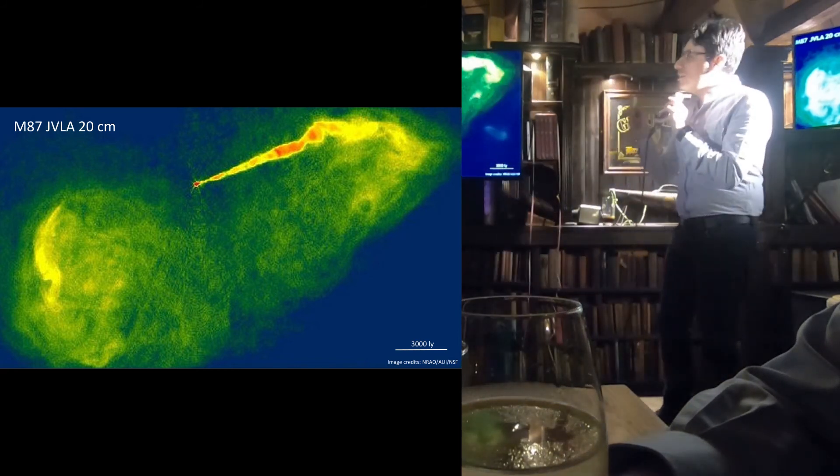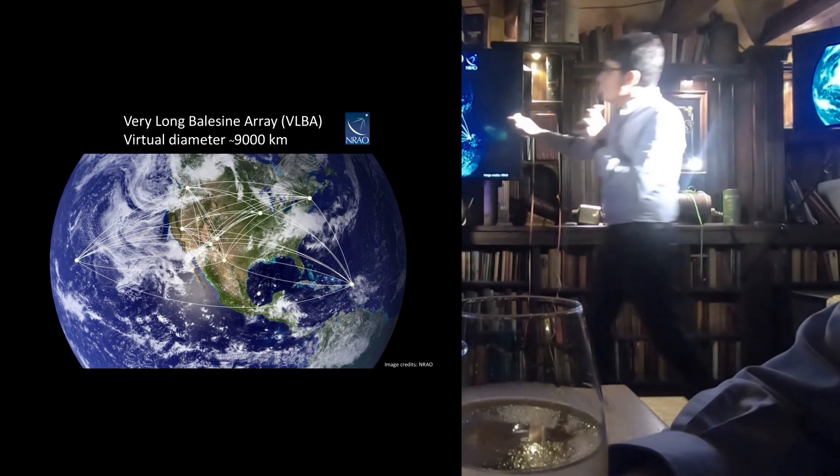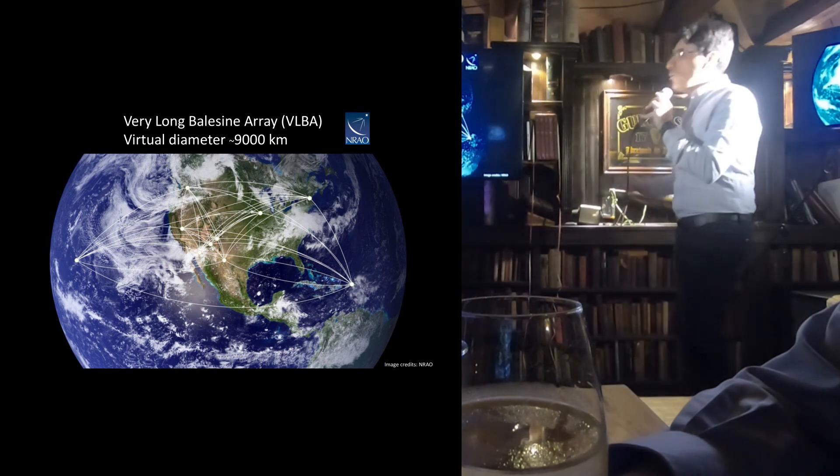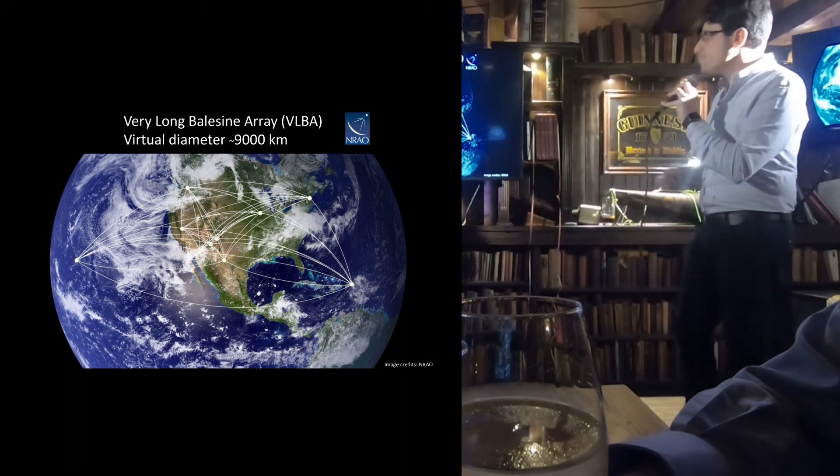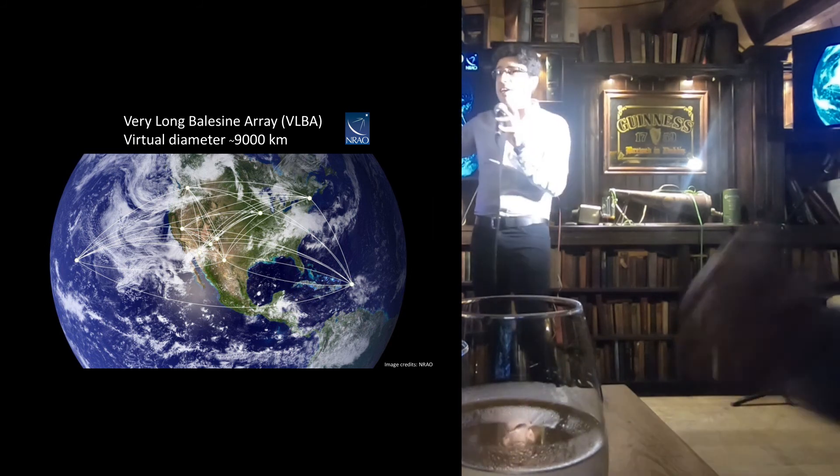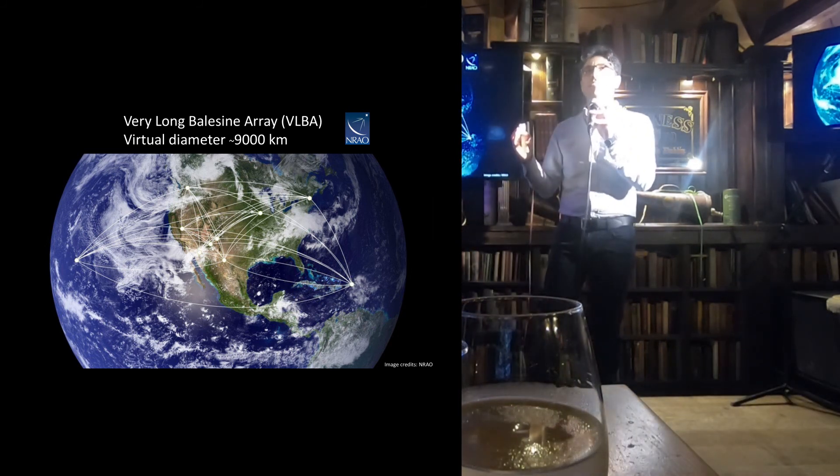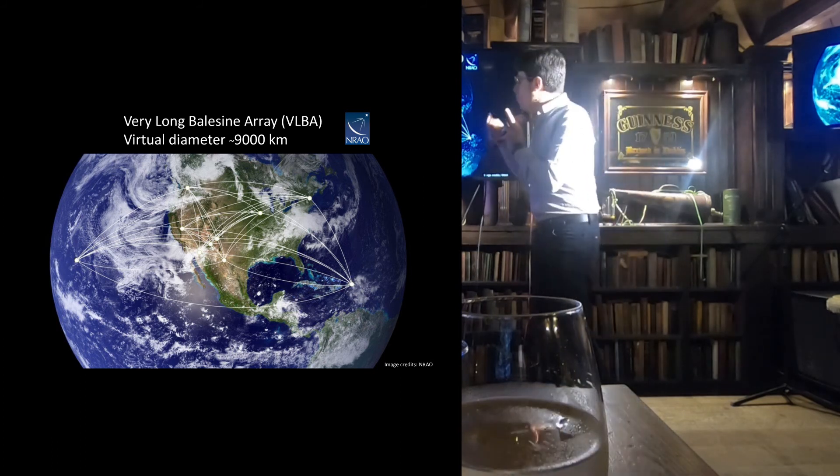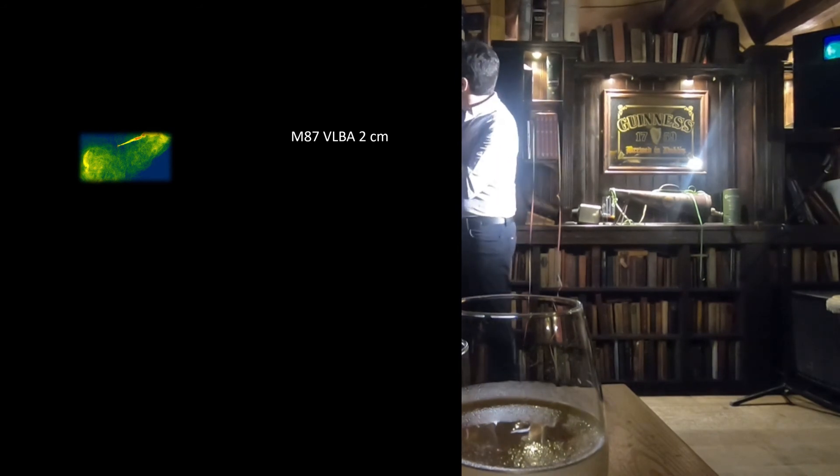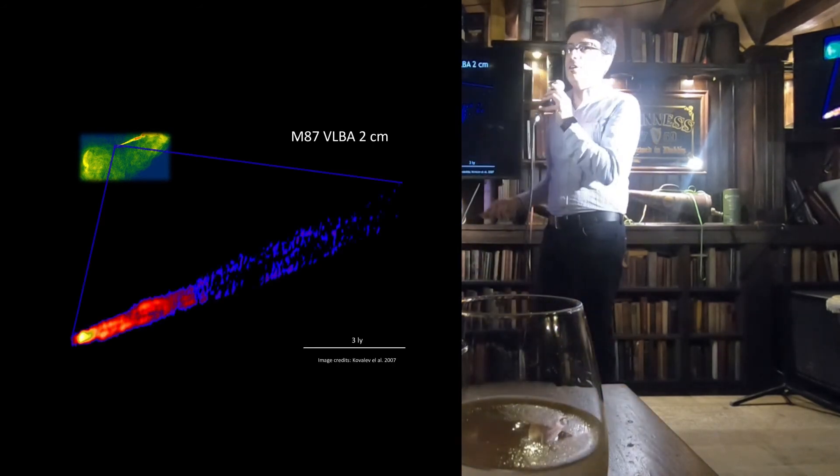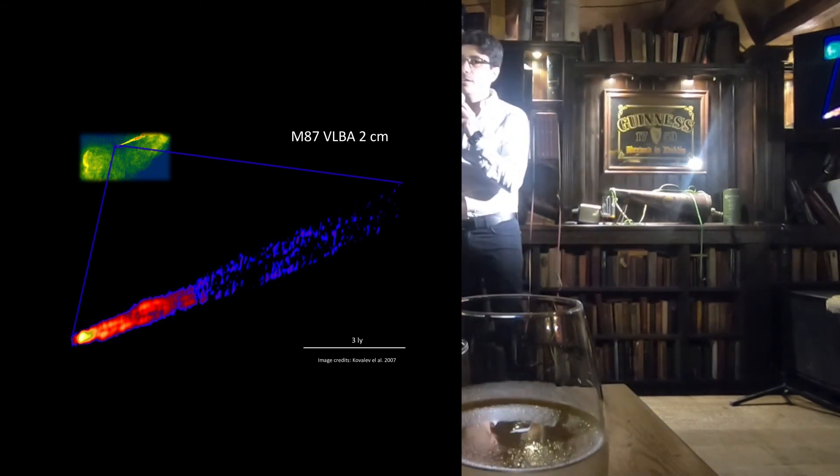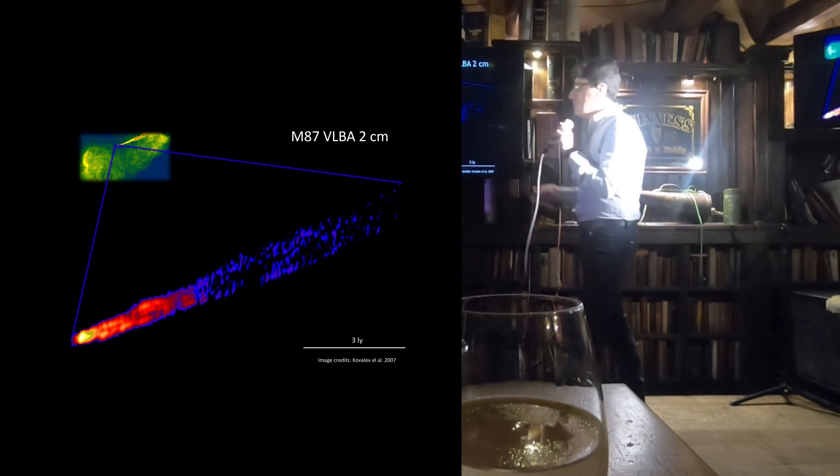Of course, we can still improve this resolution by putting telescopes on a larger distance. This is another array that is called Very Long Baseline Array which is located in North America and can simulate a radio telescope with a virtual diameter of 9,000 kilometers. I mean, wow. What we can do with this guy here, if you remember the image we obtained before, we can really zoom into there and this is what we obtain. Again, the same galaxy by zooming in. I mean, now this is a fantastic result.